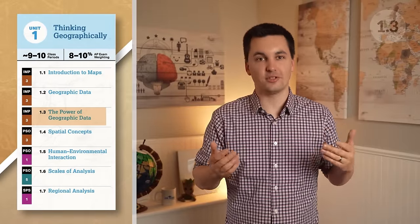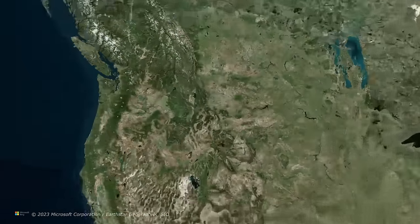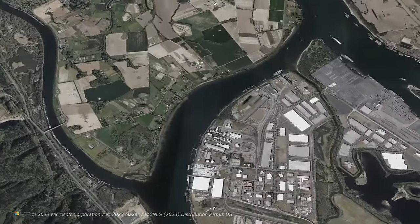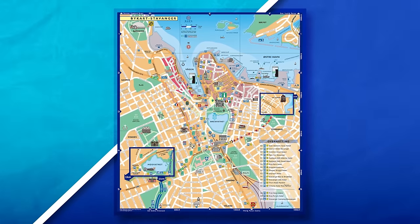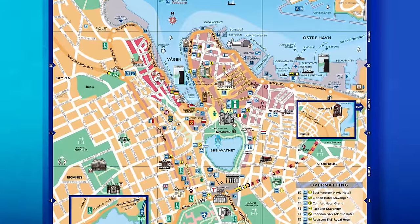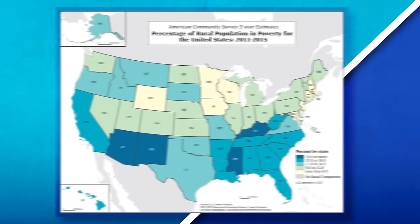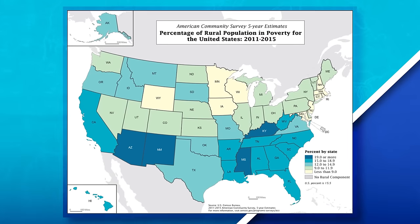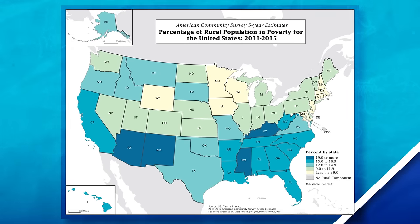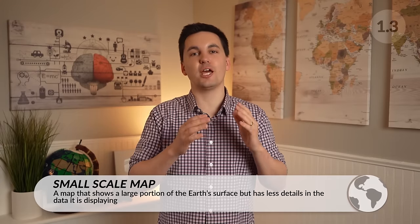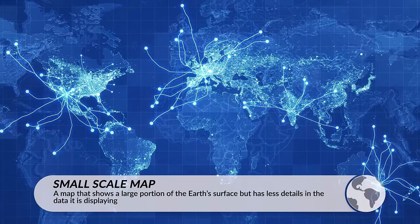Now we need to talk about what we can use geographic data for. When we change our scale, we gain different insight into geographic data. At a local scale, we see lots of details of an area. At a national scale, we lose some finer detail but can see different spatial relationships within a country's boundary. At a global scale, we see even more patterns but rely more on generalization.